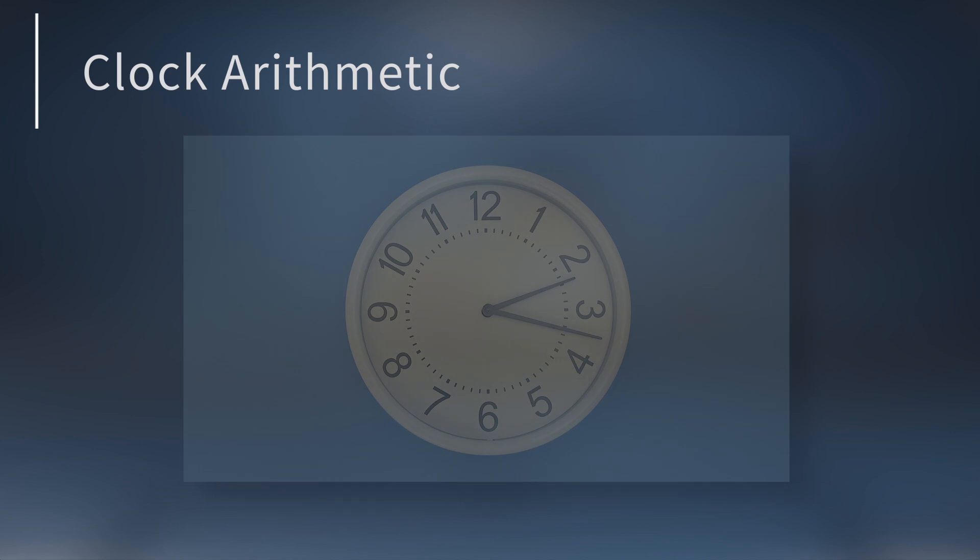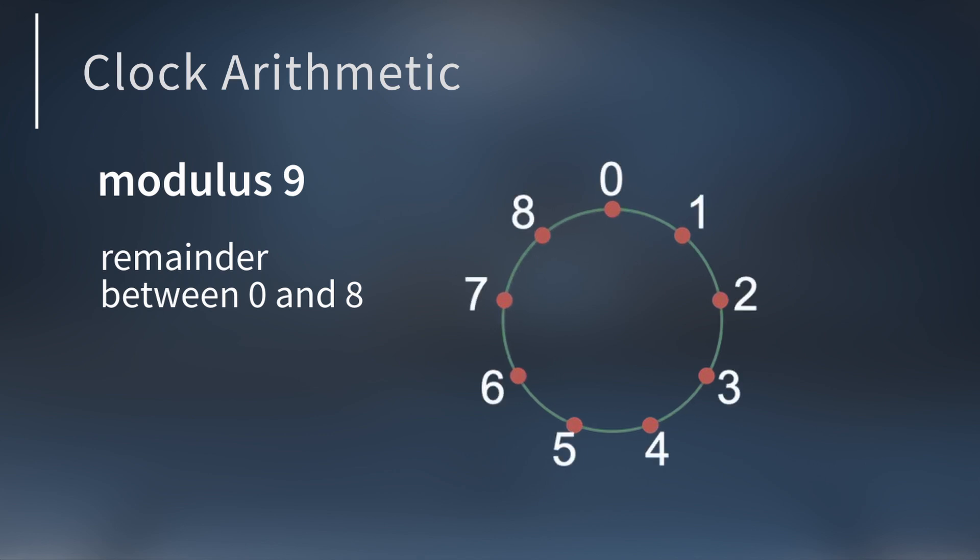Imagine we're working modulus 9. Any integer divided by 9 will have a remainder between 0 and 8. So let's label the clock with the numbers from 0 to 8.